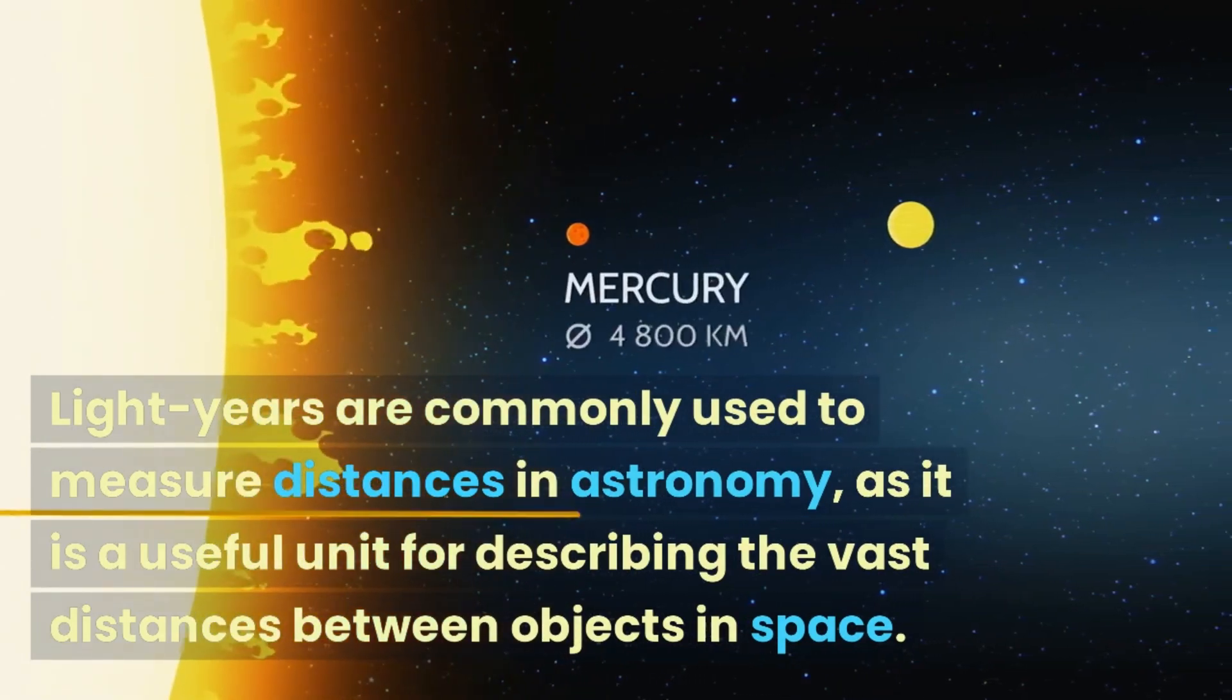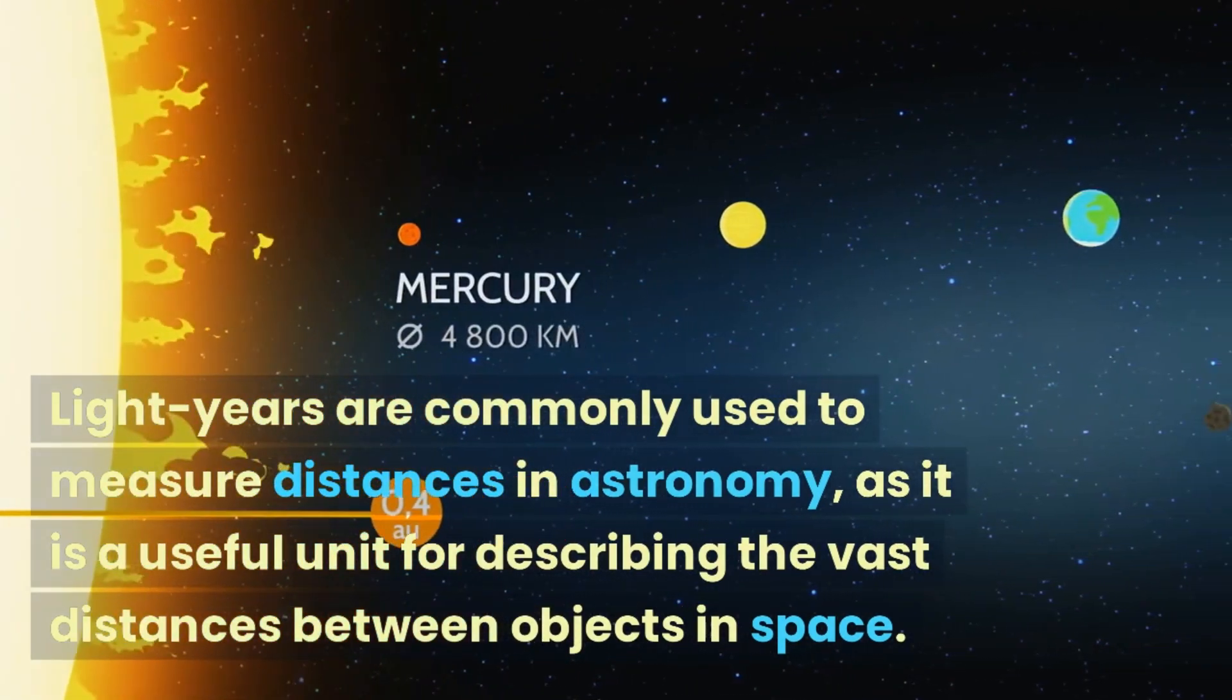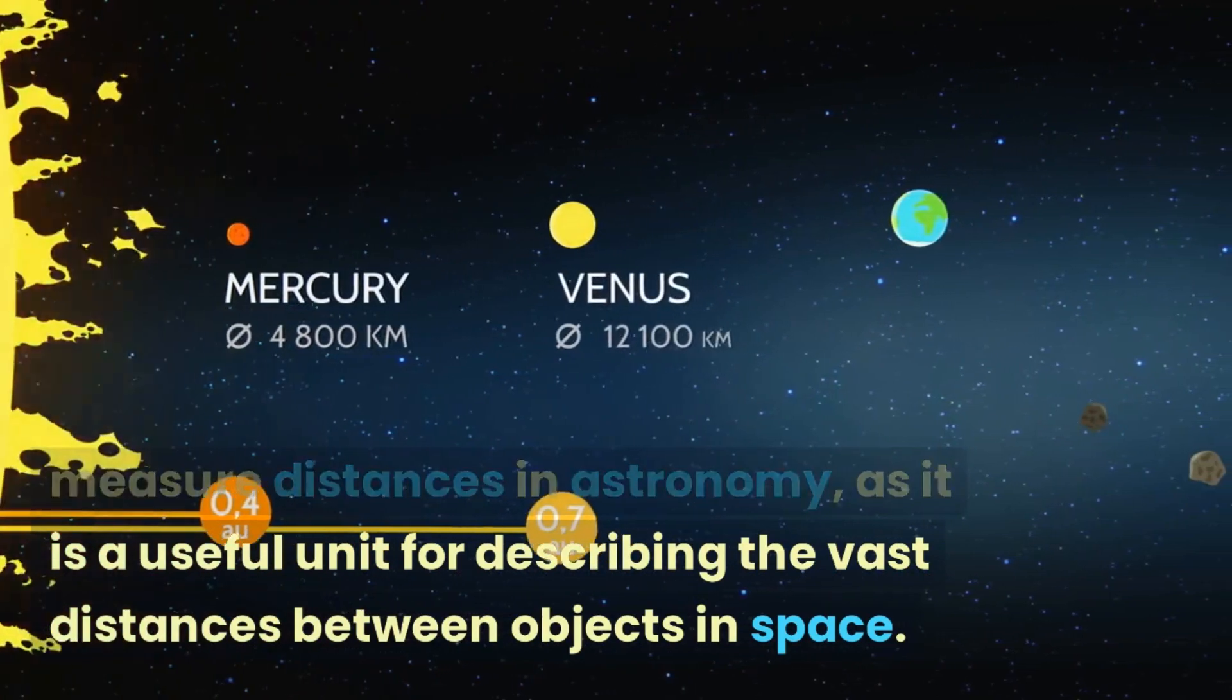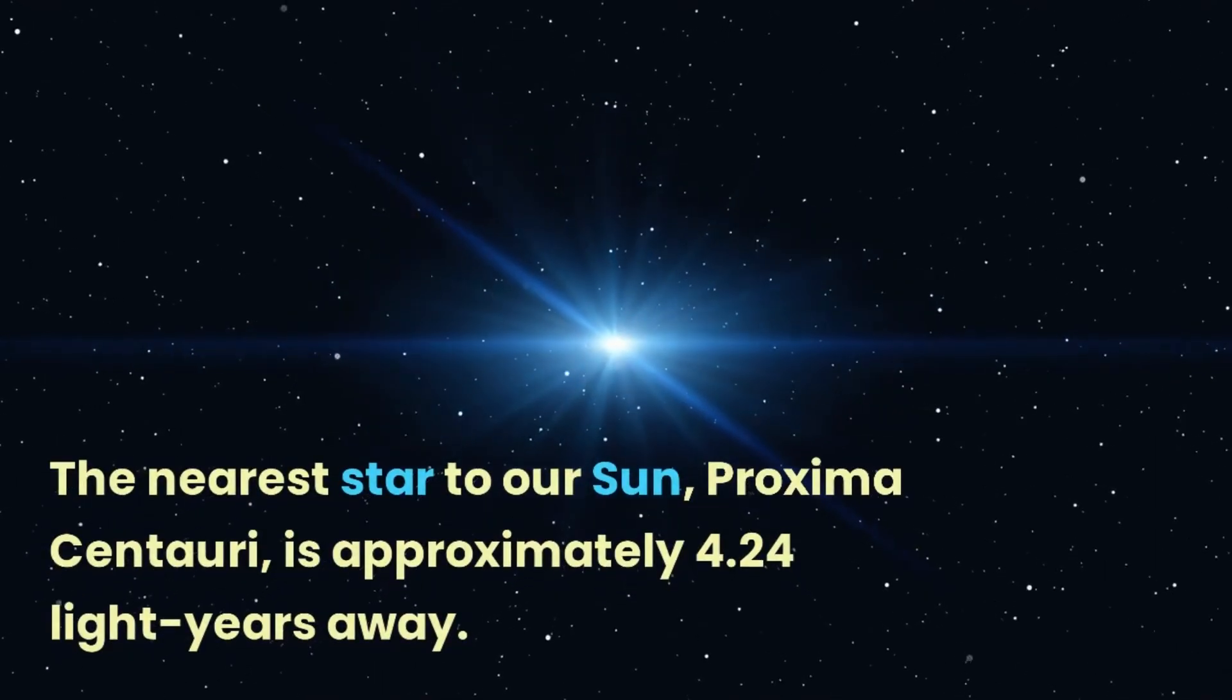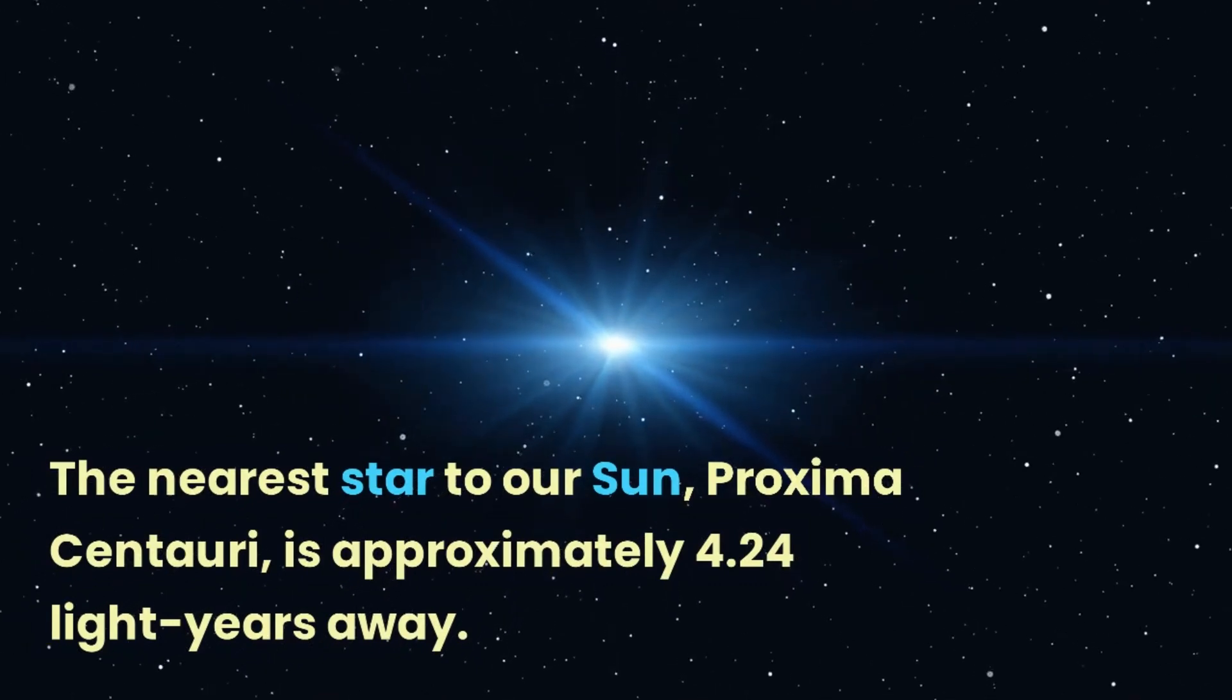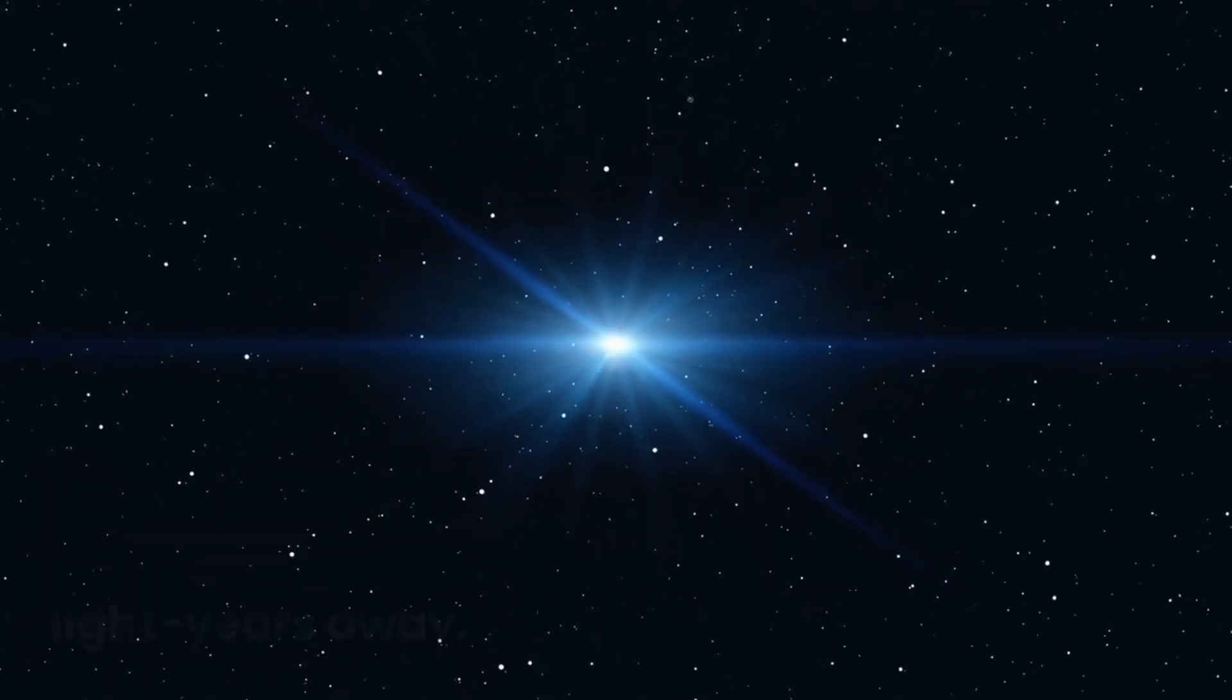Light years are commonly used to measure distances in astronomy, as it is a useful unit for describing the vast distances between objects in space. The nearest star to our sun, Proxima Centauri, is approximately 4.24 light years away.